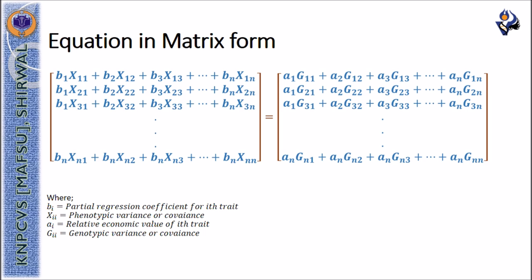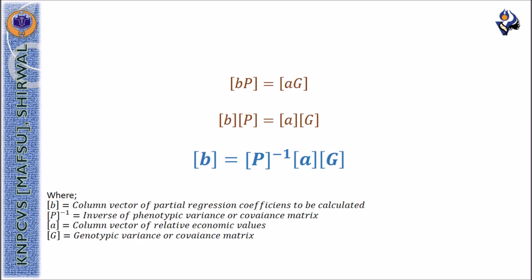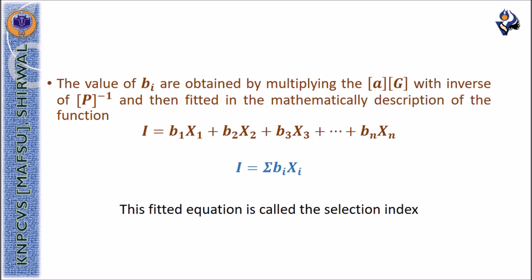and gii is the genotypic variance or covariance. It can be represented as a column vector of partial regression coefficients to be calculated is equal to inverse of the phenotypic variance and covariance matrix multiplied by column vector of relative economic values multiplied by genotypic variance and covariance matrix. Now the value of partial regression coefficients are obtained by multiplying the column vector of a with genotypic variance covariance matrix and inverse of phenotypic variance covariance matrix, and then it is fitted in the mathematical description of the function as i equals summation bixi and this fitted equation is called the selection index.